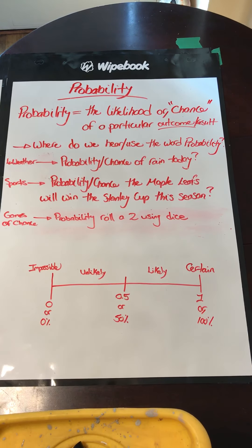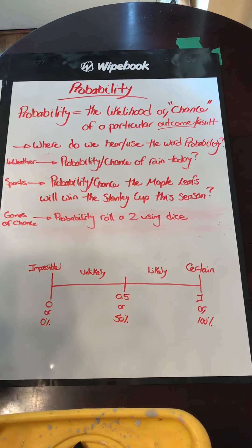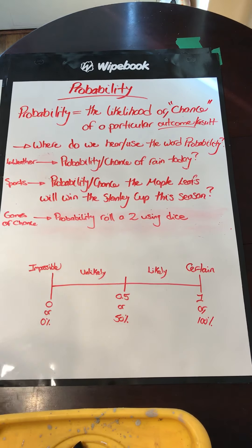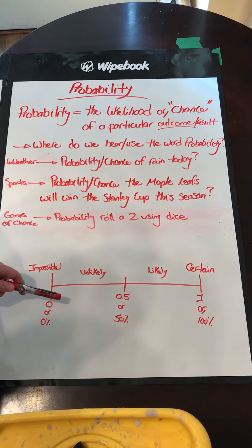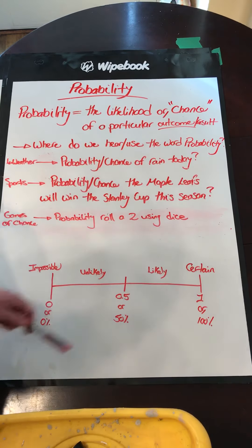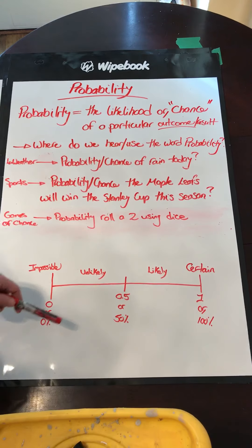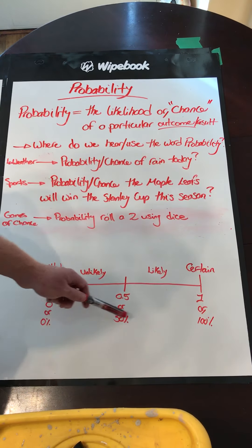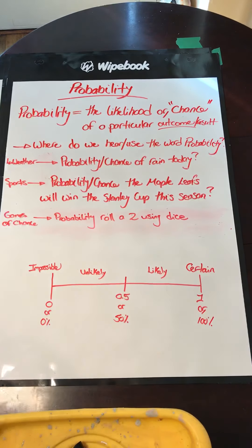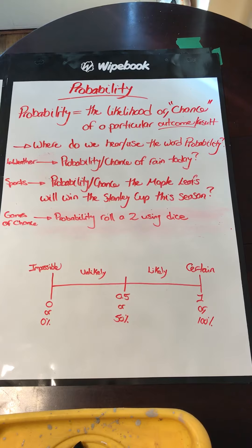When we are talking about probability, we go from the impossible, which is zero or zero percent, to unlikely, which is greater than zero percent but less than fifty percent, to likely, which is greater than fifty percent but less than a hundred percent, to certain — it is absolutely going to happen — which is one hundred percent.